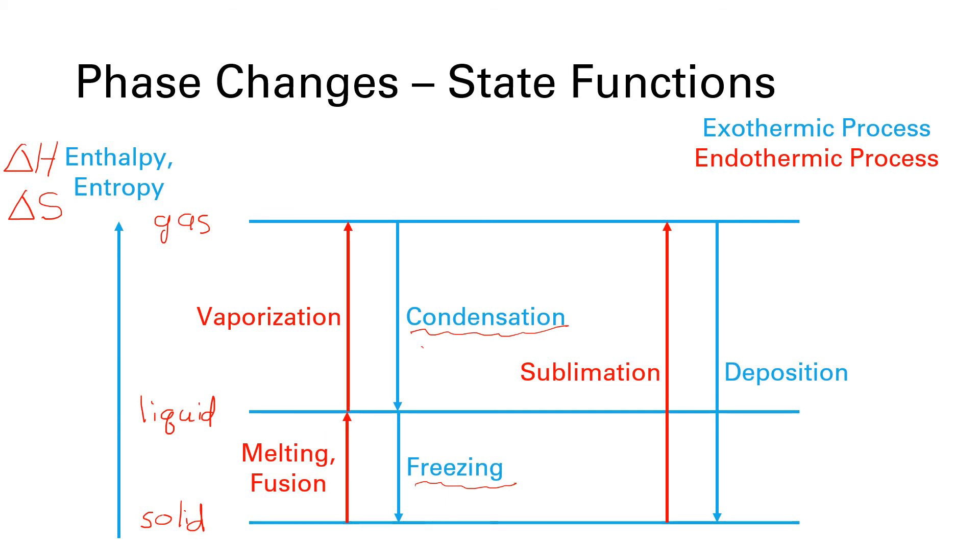Those aren't the only possible phase transitions. We can have the solid go directly to the gas phase, which is known as sublimation. And again, for the solid to turn into a gas, we have to put energy into it. So that is endothermic. And if that gas goes directly to being a solid without going into a liquid, we call that deposition. As the gas turns into the solid, it has to give away a bunch of energy. So as it releases that energy, we call that exothermic. And the sign associated with that delta H is negative.